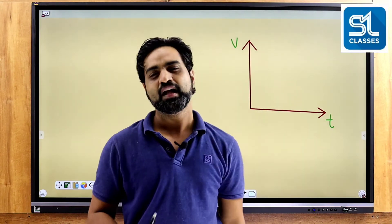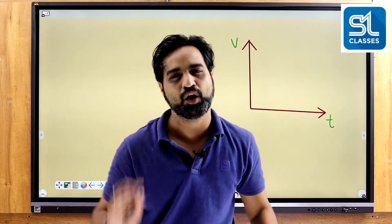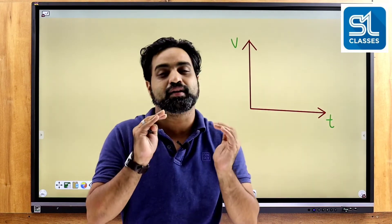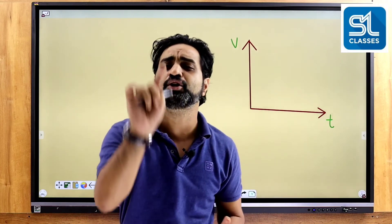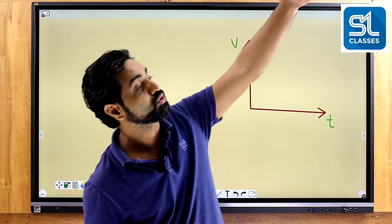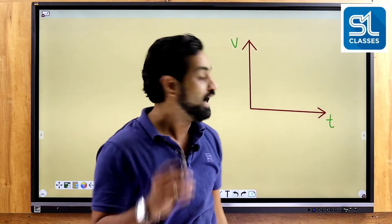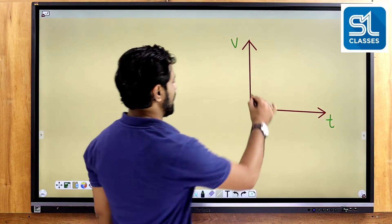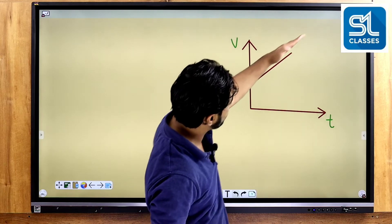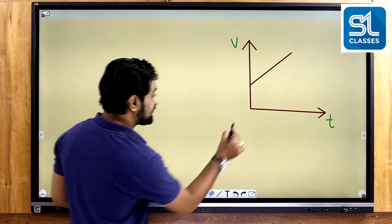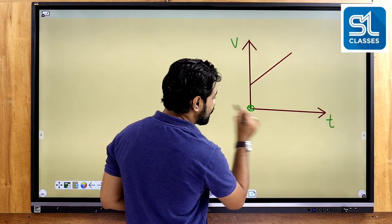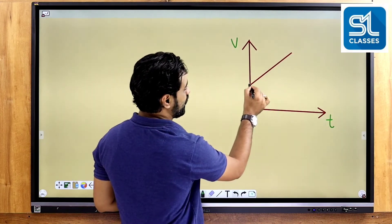That means the initial velocity. In that time, the velocity is zero because there is no limit here. We observe that the initial velocity is zero. What is U? U is the initial velocity. That is the final velocity V. There is an opportunity motion. The velocity is equal to zero. Then the velocity is increased and the final velocity is V.